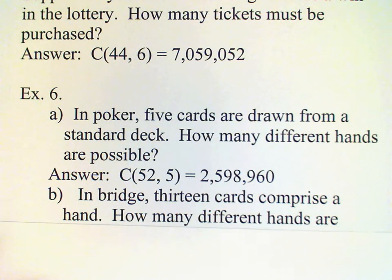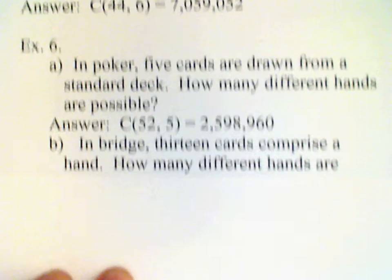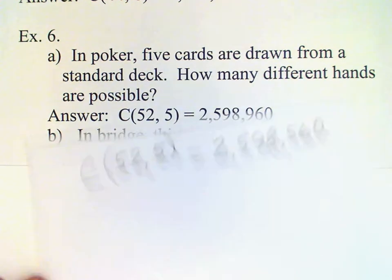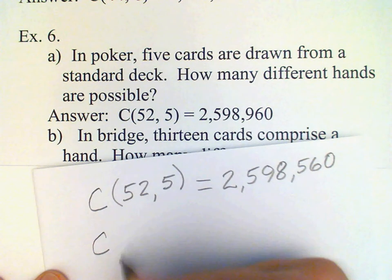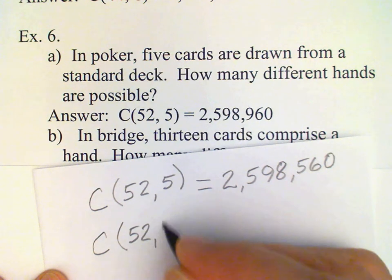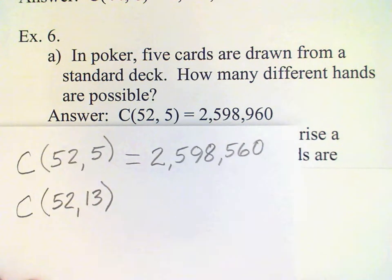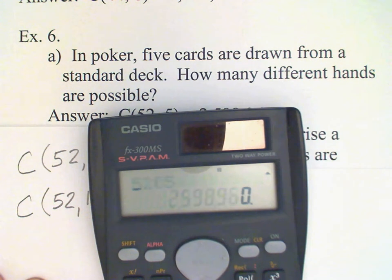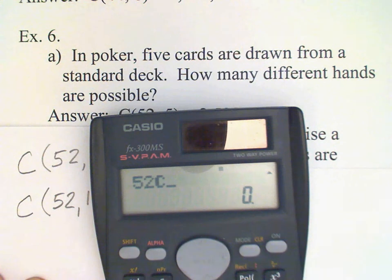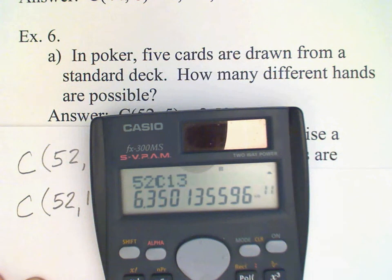Now a different card game: bridge has thirteen cards to comprise a hand. We want to know how many different bridge hands are possible. It's exactly the same kind of problem, only instead of choosing five cards we're going to choose thirteen, so C(52,13). The answer is a very large number — approximately six hundred thirty-five billion.